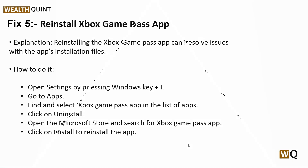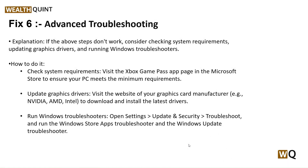The sixth step is advanced troubleshooting. If the above steps don't work, consider checking system requirements, updating your graphics driver, or running the Windows Troubleshooter. Visit the Xbox Game Pass page in the Microsoft Store to check minimum requirements. Download the latest graphics drivers from your card manufacturer's website — Nvidia, AMD, or Intel. You can also run the Windows Store Apps troubleshooter and Windows Update troubleshooter from Settings. Thanks everyone, have a nice day — don't forget to subscribe to our YouTube channel!